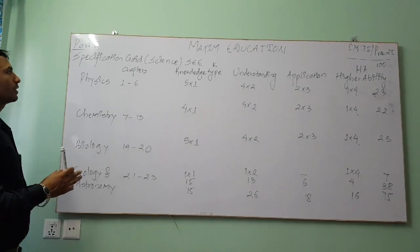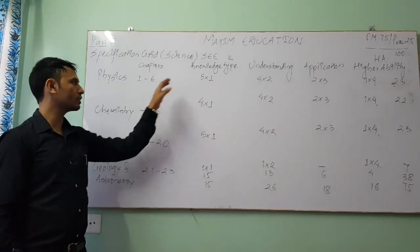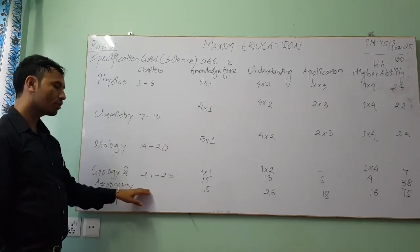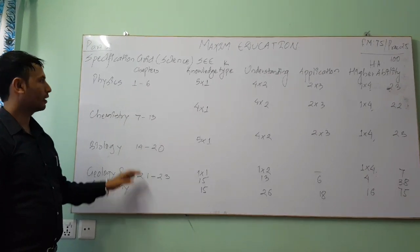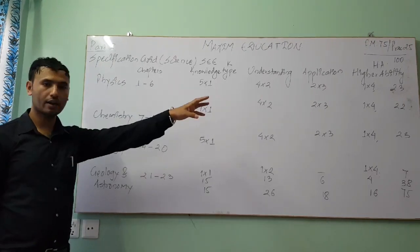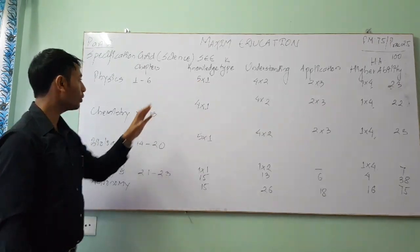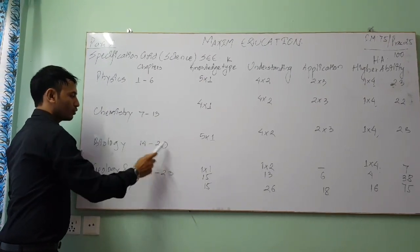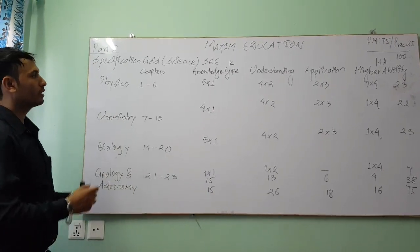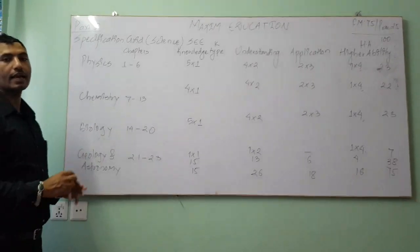There is no fixed question that will come from specific chapters. Even within physics, chemistry, biology, geology, and astronomy, which have many chapters, it is not certain that a particular part will carry the higher ability question or just a knowledge-based question. The chapters are equivalent to each other within each portion. This is how the marks and types of questions are divided in science as a specification grid.